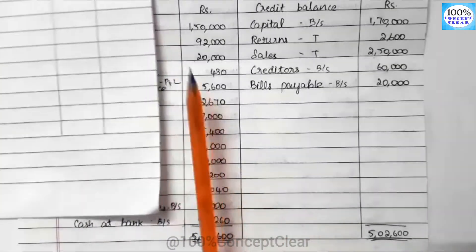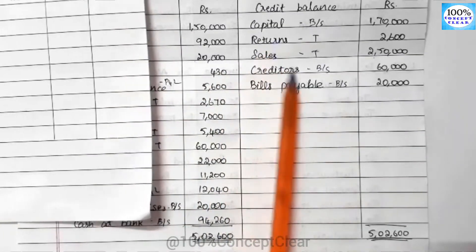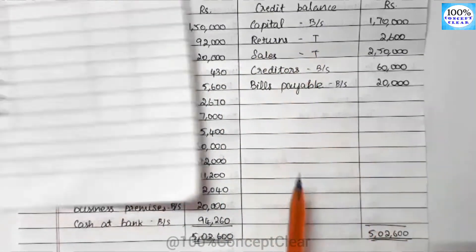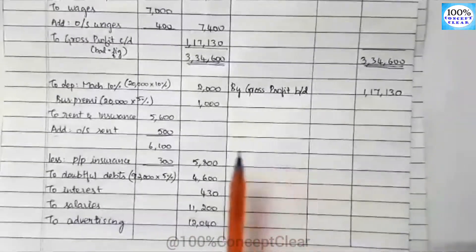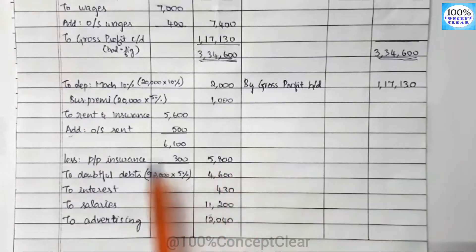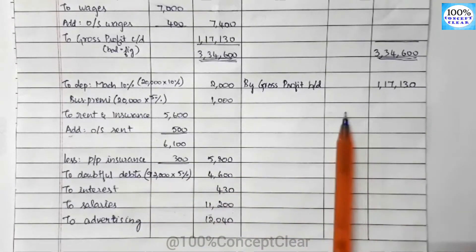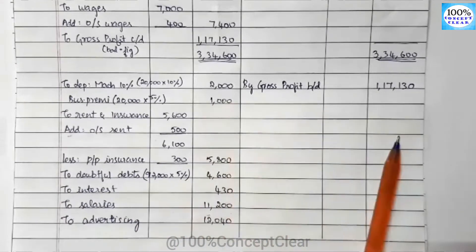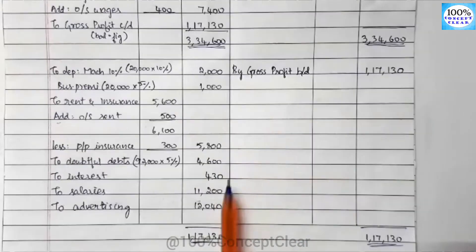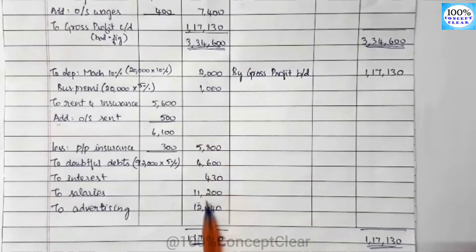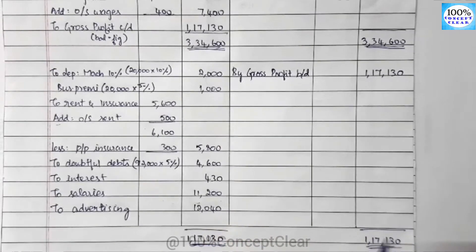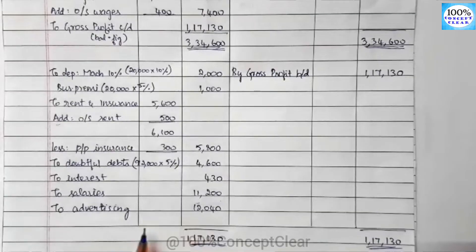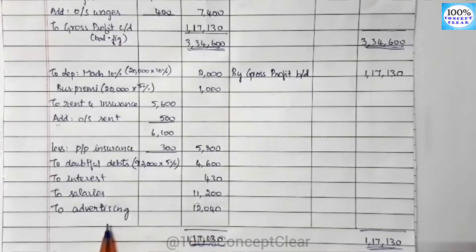Now the credit side of P&L account. Gross profit brought down is $1,17,130. The debit side total is $37,070. The balancing figure is $1,17,130. The net profit is $80,060.